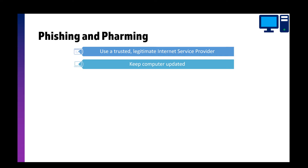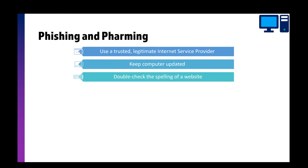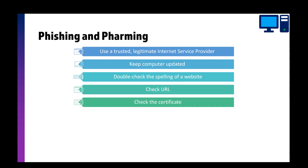Use a trusted legitimate internet service provider. Make sure your computer is updated with the latest security updates. Check the spelling of the website — in a previous video I almost fell victim to a WhatsApp site having three P's instead of two. Check the URL, make sure it's correct, and check the certificate.